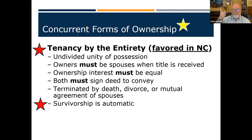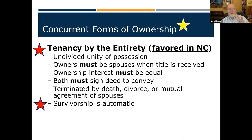To summarize the four tenancies: ownership in severalty means I'm the only owner. Tenancy in common means I can do whatever I want with my share and leave it to my heirs — the only one that allows that. Joint tenancy with rights of survivorship and tenancy by the entirety both have survivorship, meaning regardless of what your will says, it cannot defeat the survivorship clause.